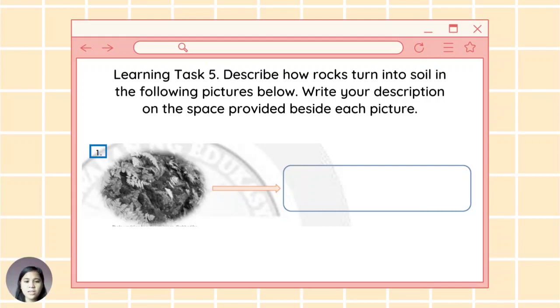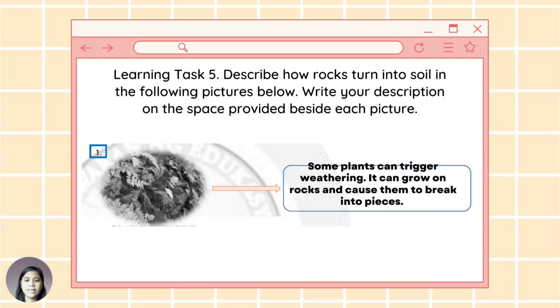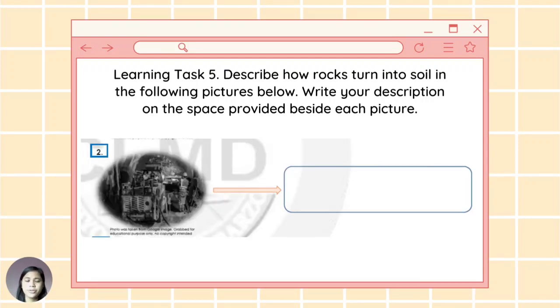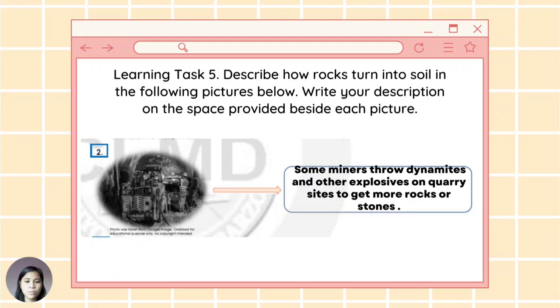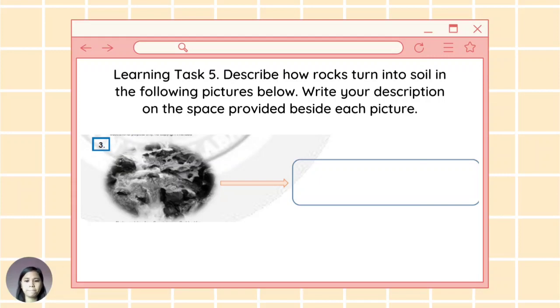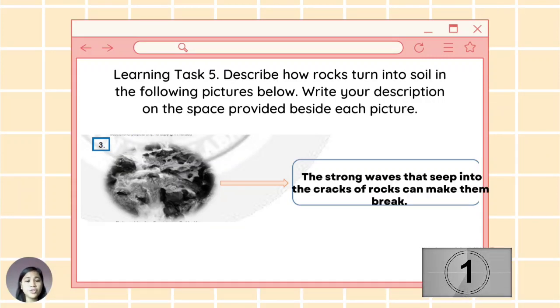For learning task number five: Describe how rocks turn into soil in the following pictures below. Write your descriptions on the space provided beside each picture. For number one: We have plants. Some plants can trigger weathering. It can grow on rocks and cause them to break into pieces. Number two: Mining or miners. Some miners throw dynamites and other explosives on quarry sites to get more rocks or stones. For number three: We have water. The strong waves that seep into the cracks of rocks can make them break.